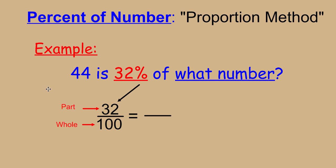Since 32 is the part, we know that 44 is comparable to 32, and that can be recognized as the part as well. That means when it says of what number, the number we're trying to find is the whole, and can be comparable to 100 in the percent.